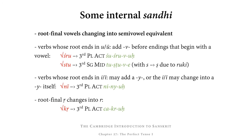Finally, root-final vocalic ṛ changes into consonantal r. For example, of kṛ, we have the third person plural active form cakruḥ — ca is the reduplicative syllable, kṛ is the root in zero grade, and the vocalic ṛ has been replaced by consonantal r because what follows is the ending uḥ, which begins with a vowel, and in front of this vowel vocalic ṛ changes into consonantal r.